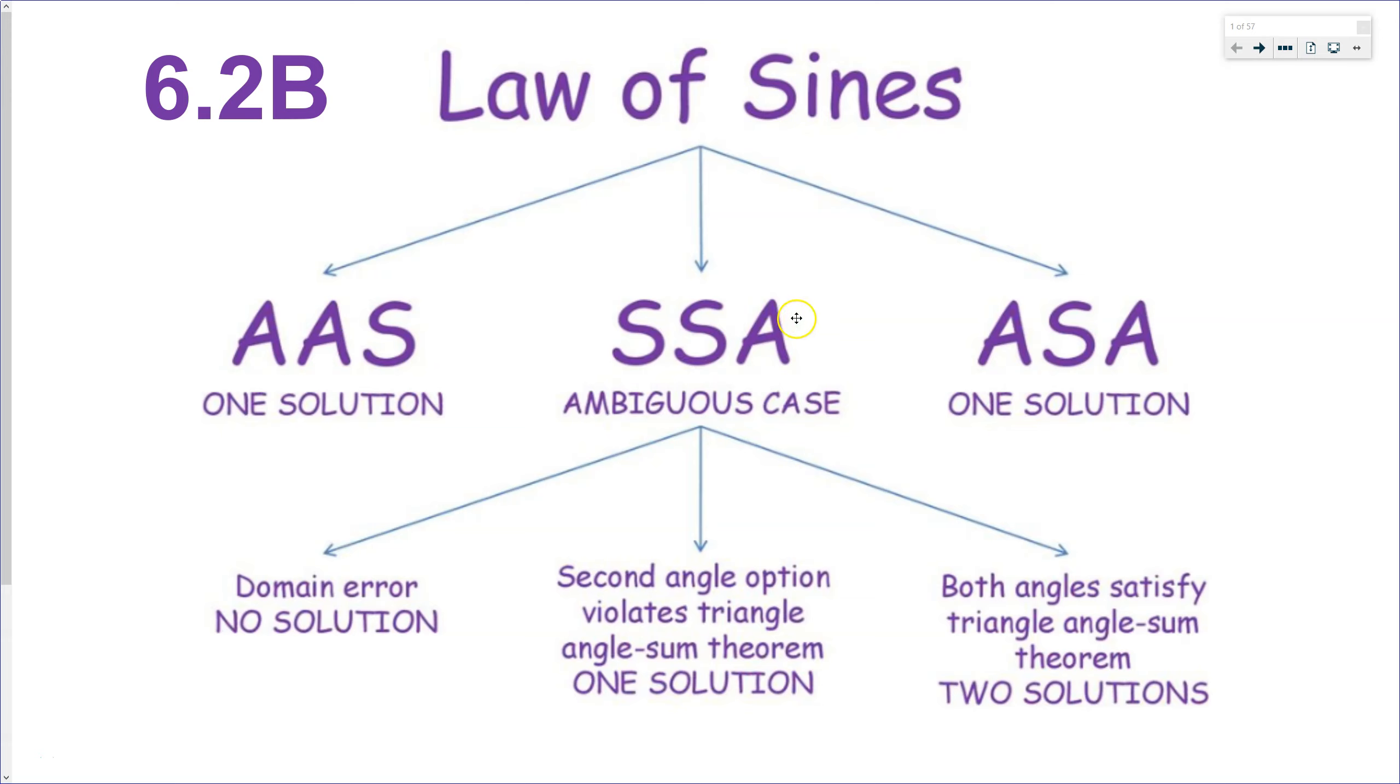The middle case, the SSA case, is ambiguous. In this case, it is possible to have no triangles, just one triangle, or sometimes it's possible to have two triangles based on the given information. Today we're going to work through three cases and understand why each of the three cases arise.